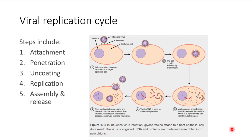Viral replication cycles. Generally, viruses follow this series of steps in order to replicate themselves. The very first step is to attach to the cell that it wants to infect. We're going to be looking at a schematic with influenza — this is the influenza virus particle right here — and the first step is to attach to the cell.